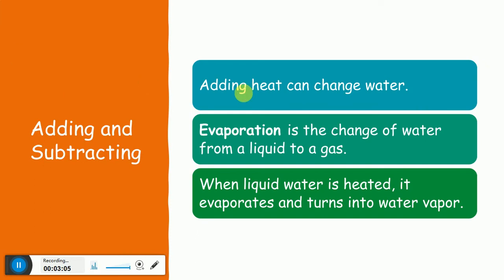Now if we add more heat to the liquid water, we can also change it. Adding more heat can change water again. If the water is in the liquid state and we add more heat to it, it's going to turn into a gas. This process is called evaporation — repeat after me: evaporation. It's the change of water from a liquid to a gas. When liquid water is heated, it evaporates and turns into water vapor.